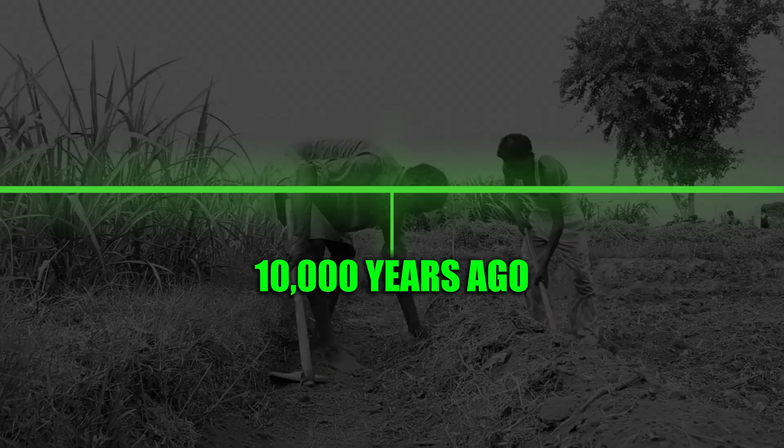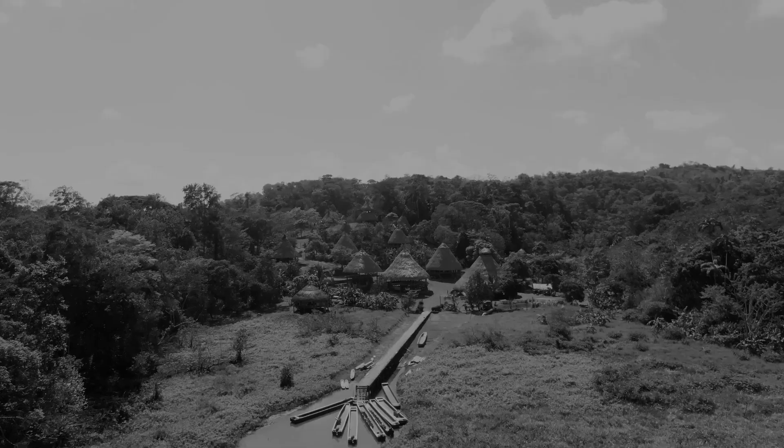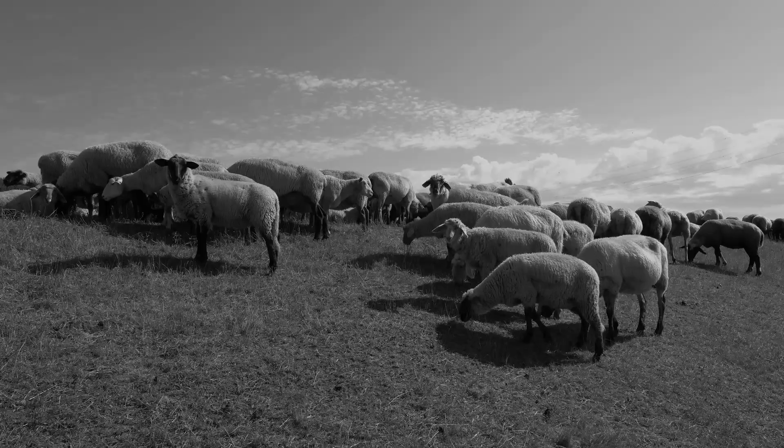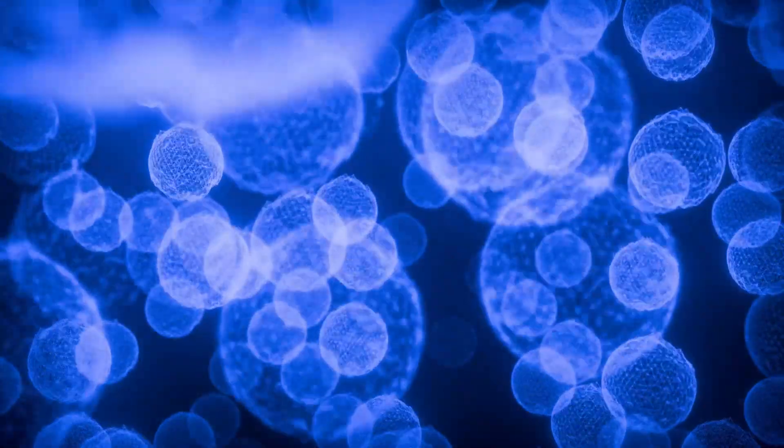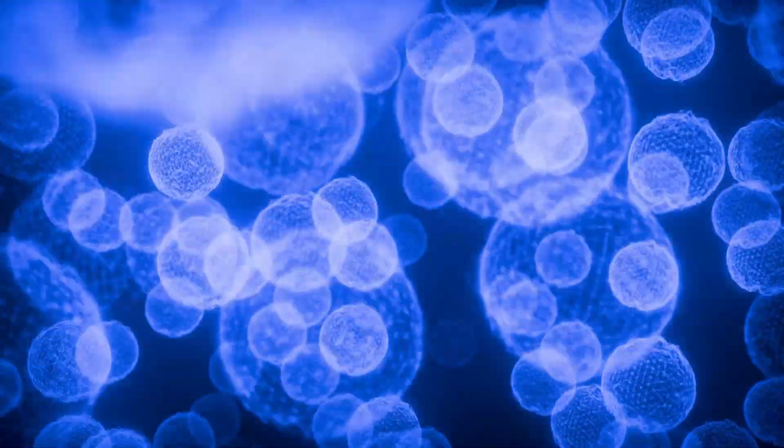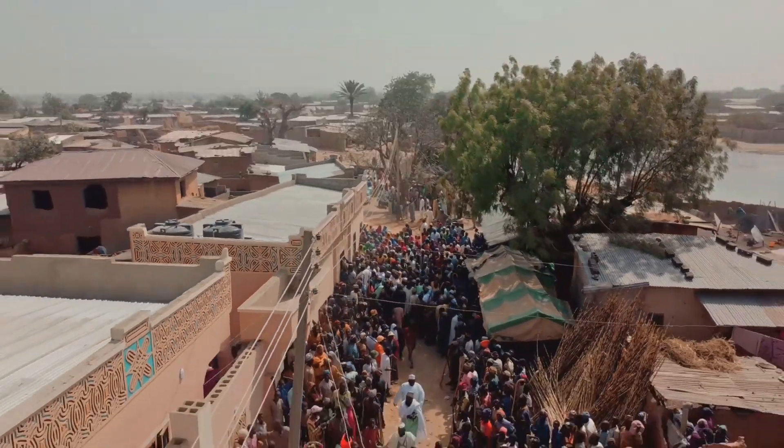Around 10,000 years ago, our ancestors started farming. They built the first villages, kept animals close, and began living in tight, crowded spaces. Parasites no longer had to wait for slow changes in nature. Humans gave them something quicker.